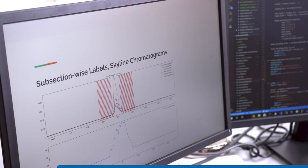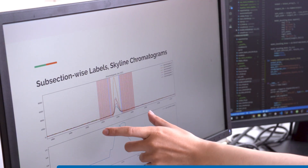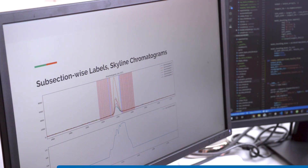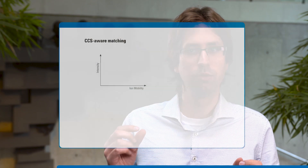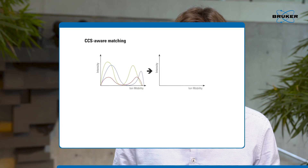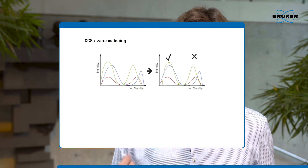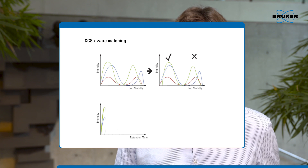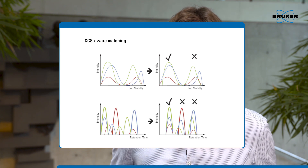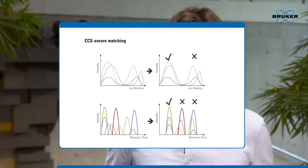When we use the TIMSTOF Pro to perform DIA-PASEF, it allows us to synchronize the quadrupole position with the elution in ion mobility, and this gives us a boost in throughput up to four-fold, getting four times as many ions into the detector, and this dramatically boosts the number of peptide identifications.